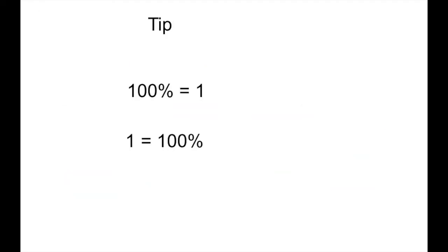Now sometimes students get confused about which way to move the decimal point. I just tell them to think about 1 — one is 100%. So if I'm going from a percent, I have to move the decimal point two places to the left to get to 1. From percent to decimal, I move left two. But if I start with 1, that's 100%, so I move it two places to the right, filling in with zeros. From decimal to percent, I move right two. Some students write this as a little cheat sheet at the top of their paper.